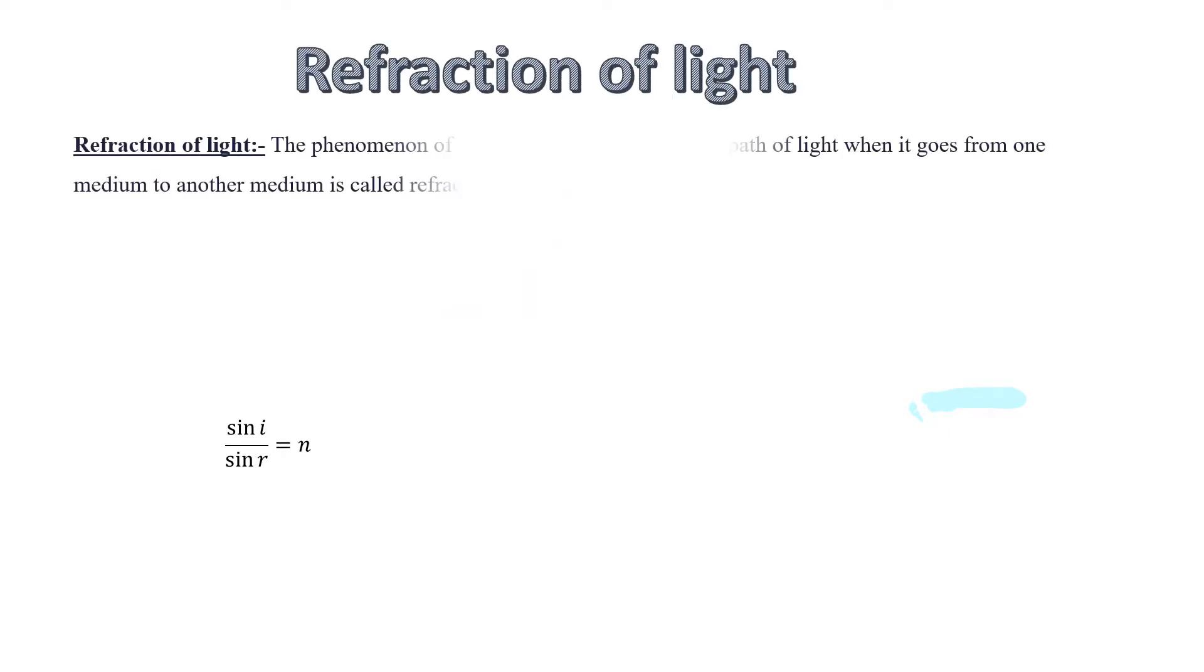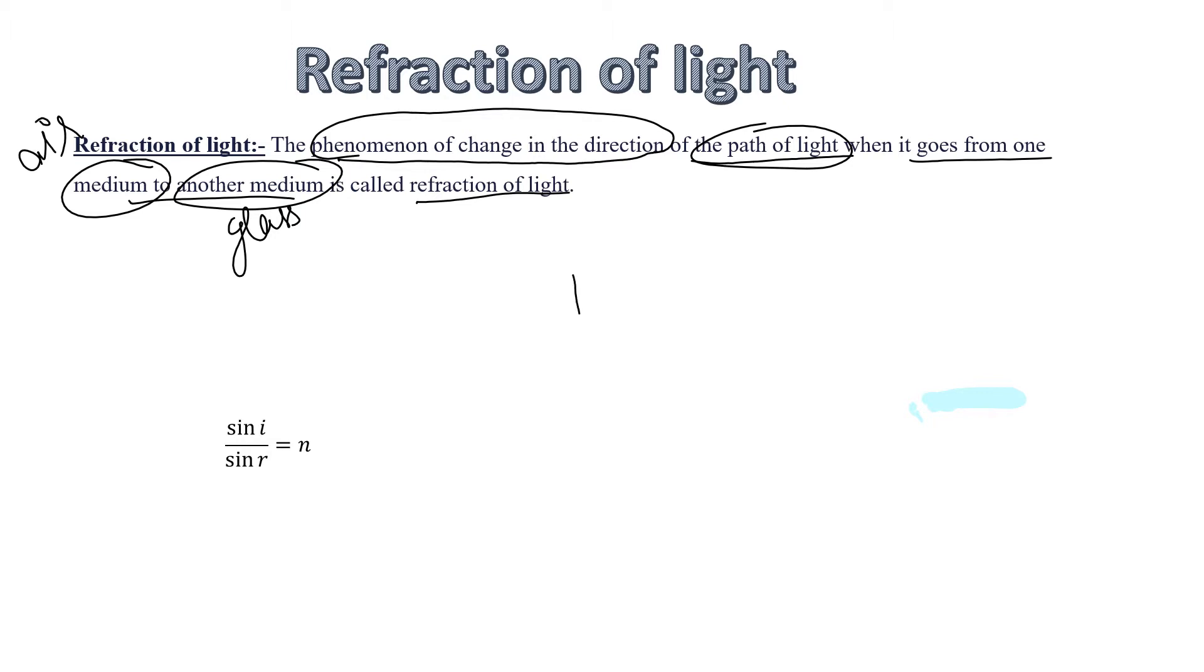Refraction of light: The phenomenon of change in the direction of path of light when it goes from one medium to another medium. For example, from air to glass or water. This is called refraction of light. When light goes from one medium to another, the path changes.